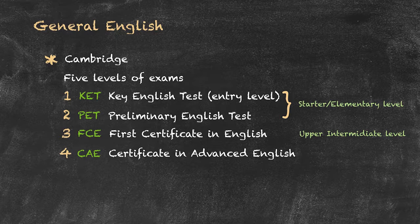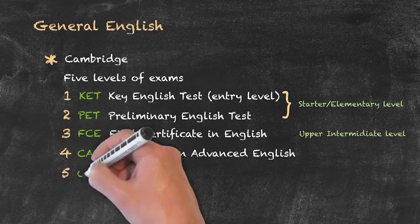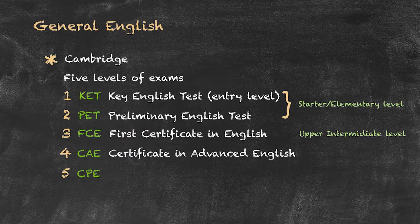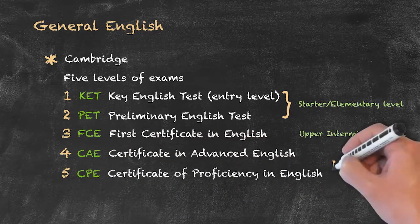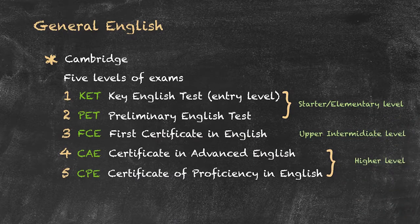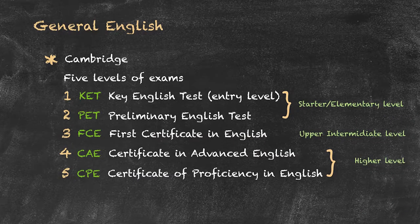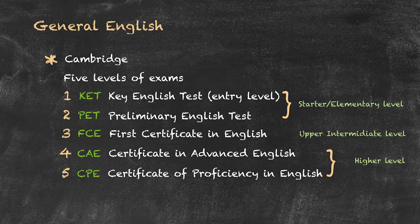However, that's still not the highest level of examination offered. The final level is called the CPE, or Certificate of Proficiency in English. Rather ironic perhaps that it's called the certificate of proficiency when it's the highest level of exam that you can take. So the Cambridge suite offers five different levels of examination.